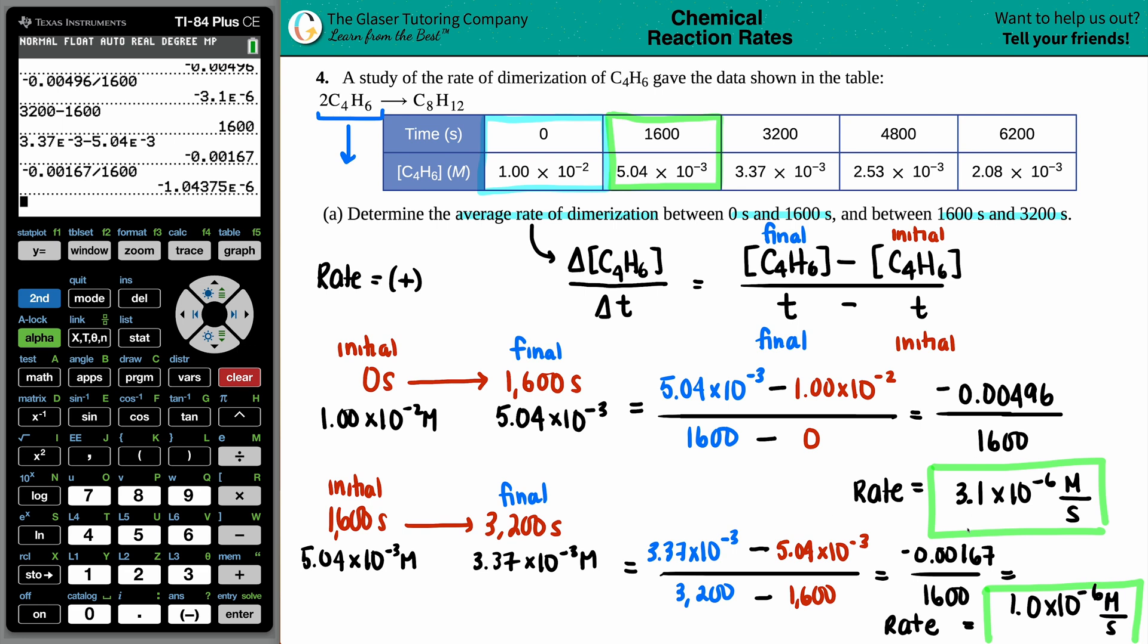So the rate would specifically be 3.1 times 10 to the negative 6 molarity per second. The negative just meant that it was decreasing. So just know the difference. If they're asking for a rate, calculator may give you a negative value, but just it's always the absolute value. But use that negative to just put the context in there.